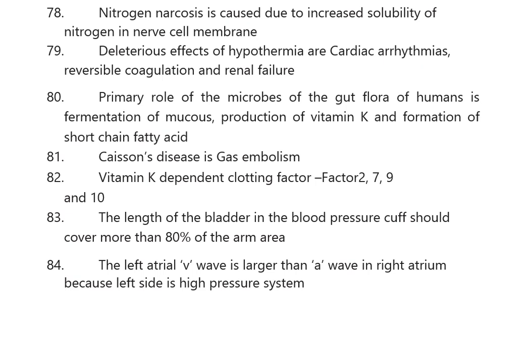The primary role of the gut microbiome in humans is formation of mucus, production of vitamin K, and formation of short-chain fatty acids. Caissons disease involves gas embolism. Vitamin K-dependent clotting factors are 2, 7, 9, and 10. The length of the bladder in a blood pressure cuff should cover more than 80% of the arm circumference.